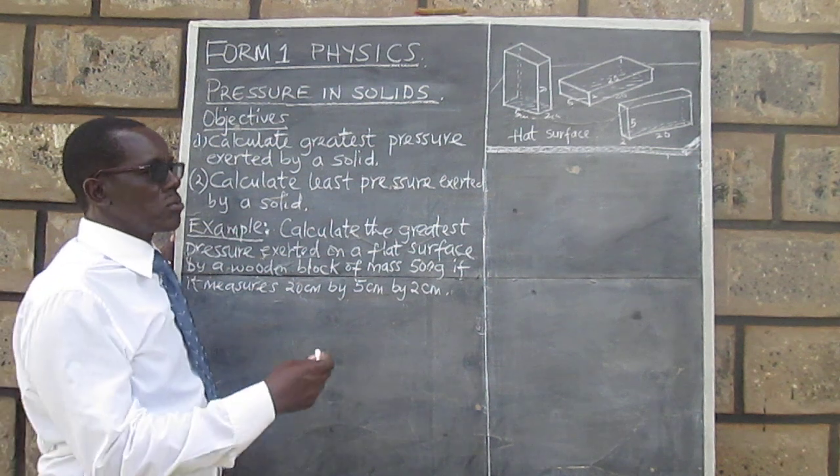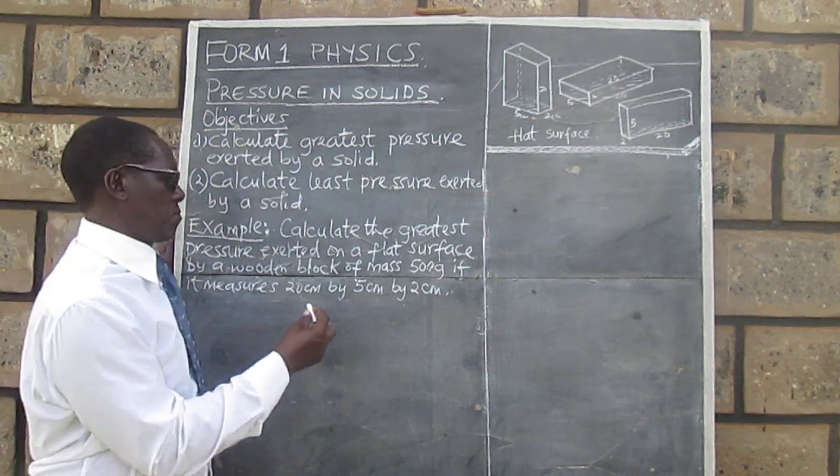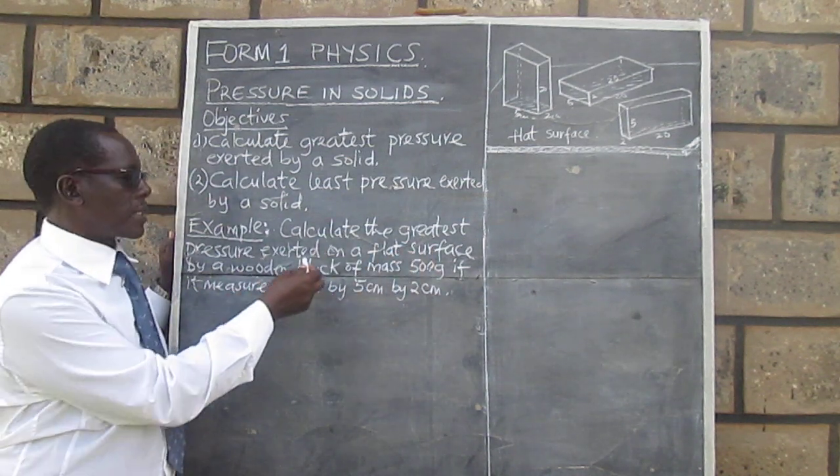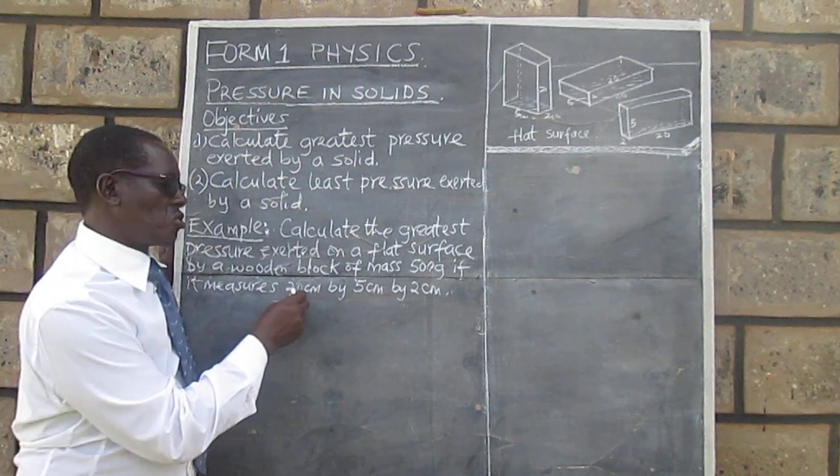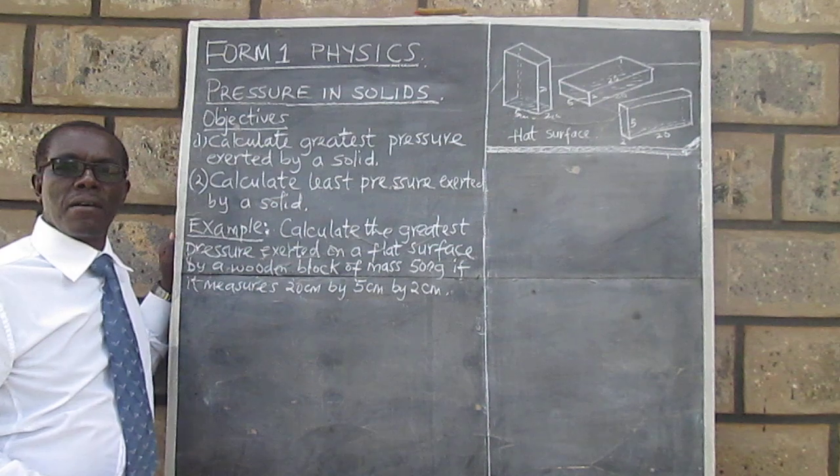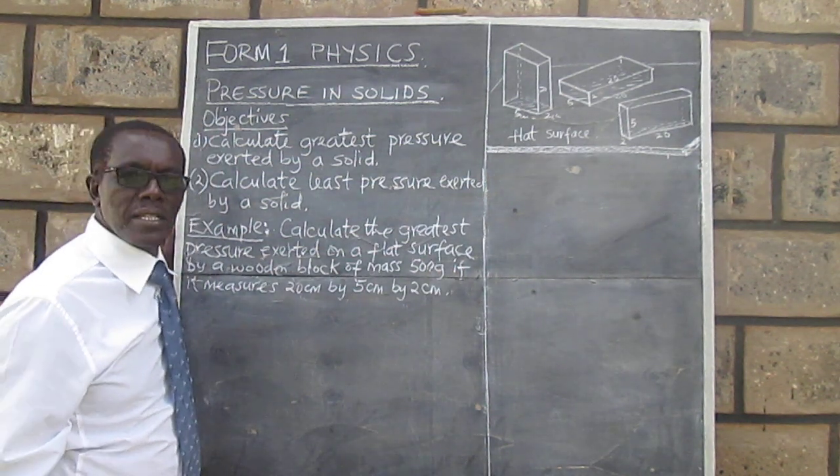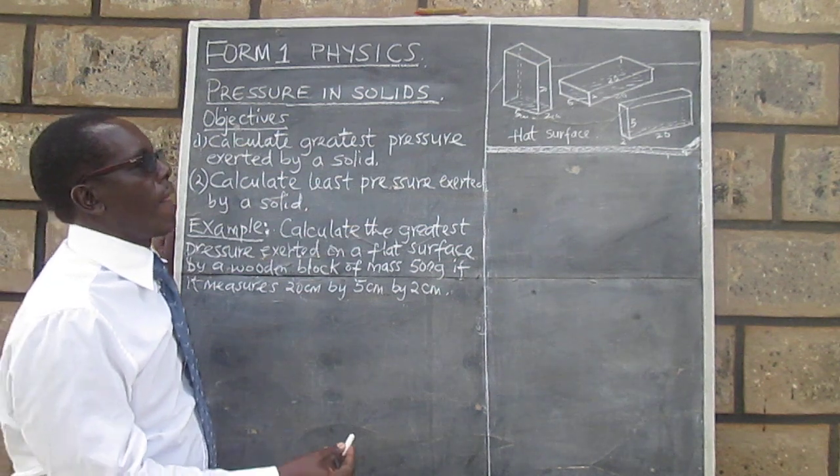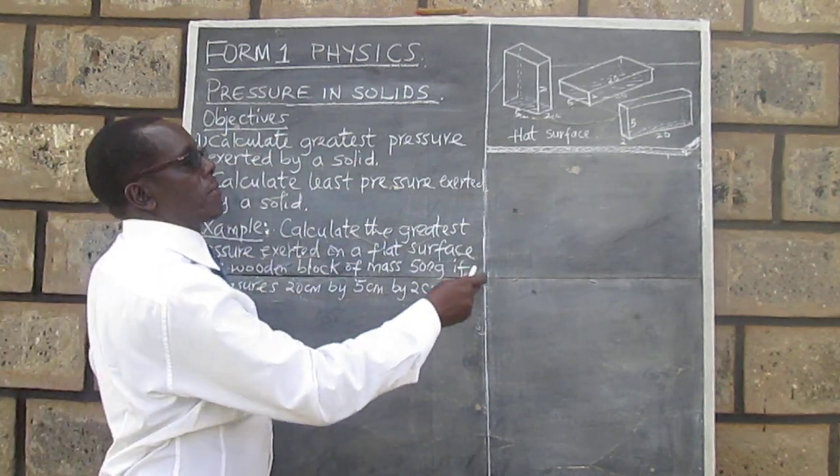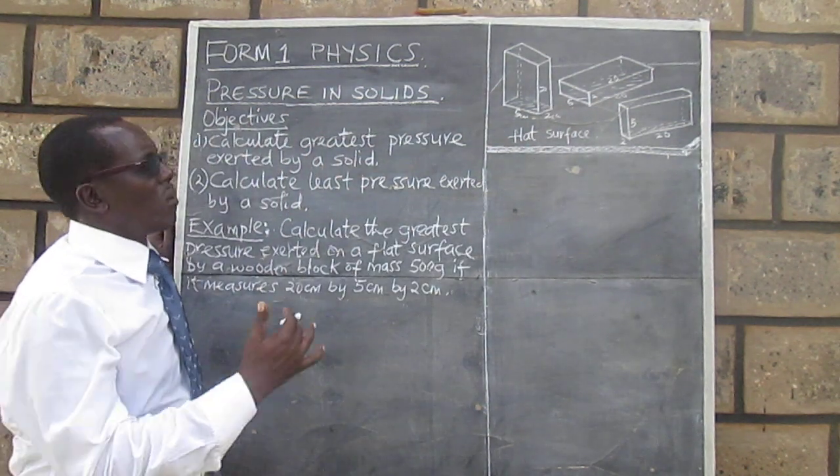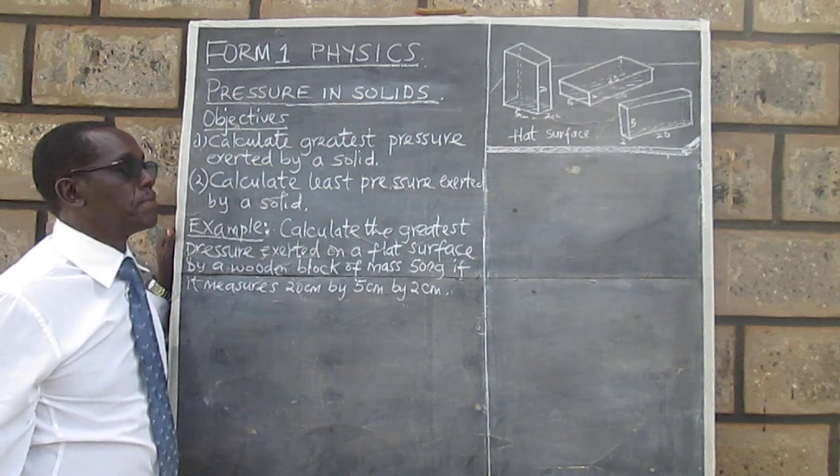For us to get there, we will need to look at a question. The question requires us to calculate the greatest pressure exerted on a flat surface by a wooden block of mass 500 grams if it measures 20 centimeters by 5 centimeters by 2 centimeters. On the other side of the board there is a sketch to help us visualize what this kind of block is. The first one, the block is resting on its smallest surface, the second one with its largest surface, and this one with the remaining surface.